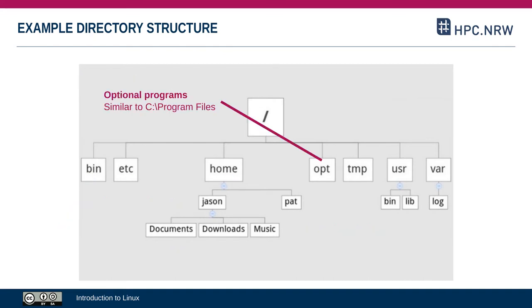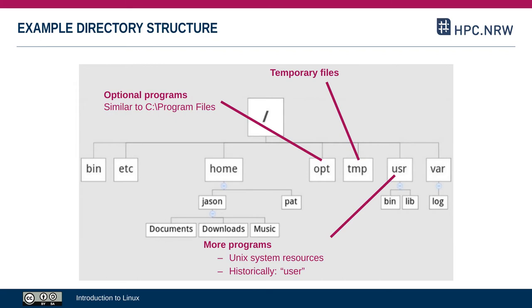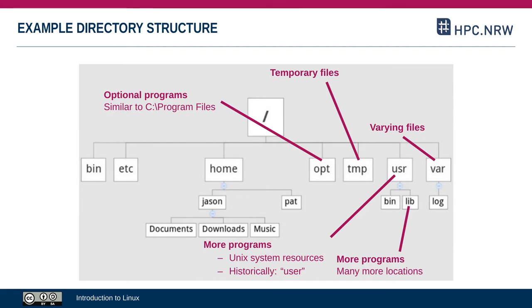The opt directory contains optional programs, hence the name, and is somewhat similar to the C:\Program Files directory on Windows. The tmp directory contains temporary files. The usr directory contains what's called unique system resources — mostly other programs and program libraries. Interestingly, usr does not stand for user and does not contain user-specific data; it has multiple levels of subdirectories but is mostly binaries and libraries. The var directory contains files that vary over time, hence the name — the most prominent example being log files.